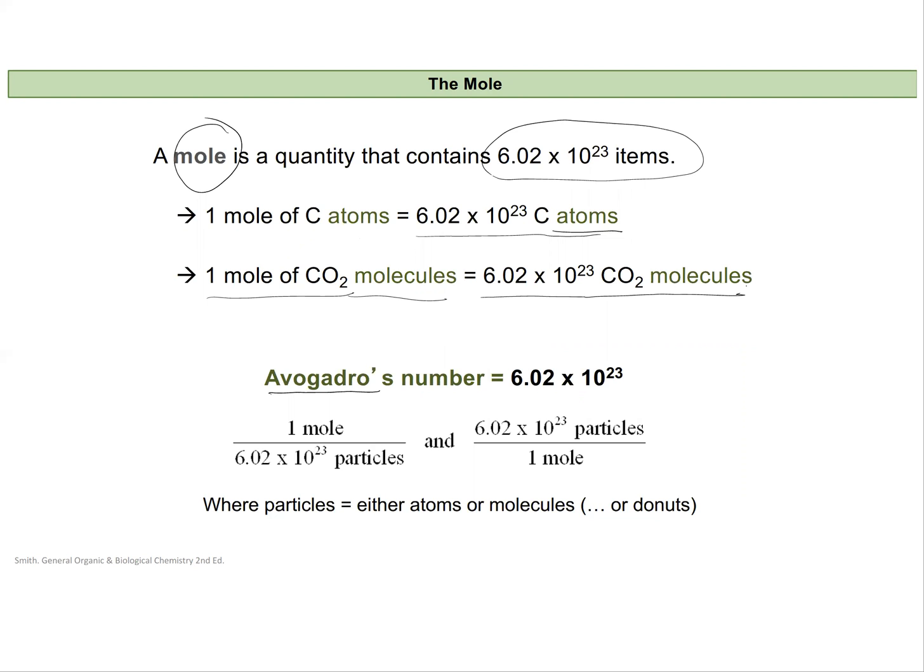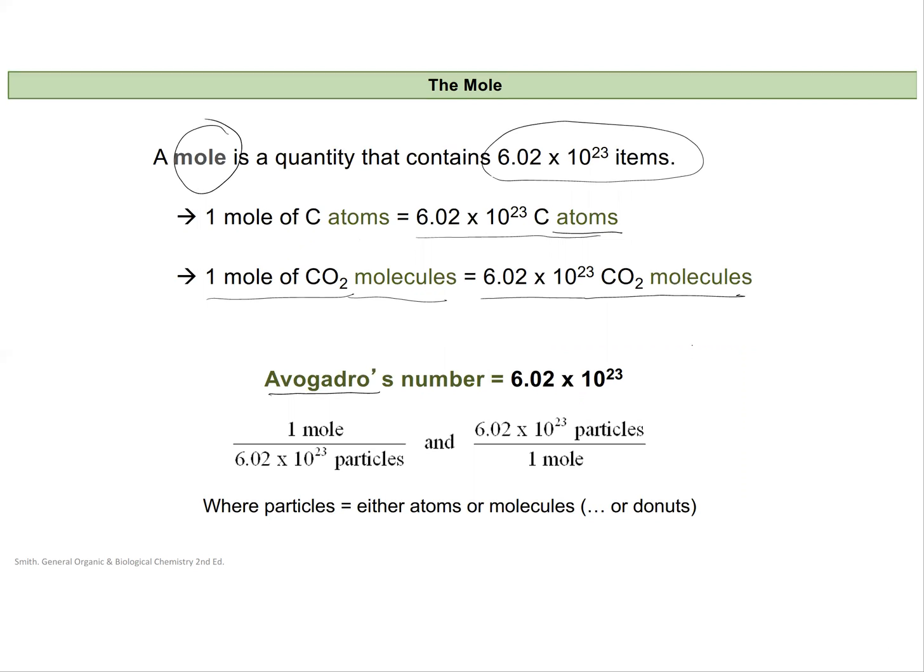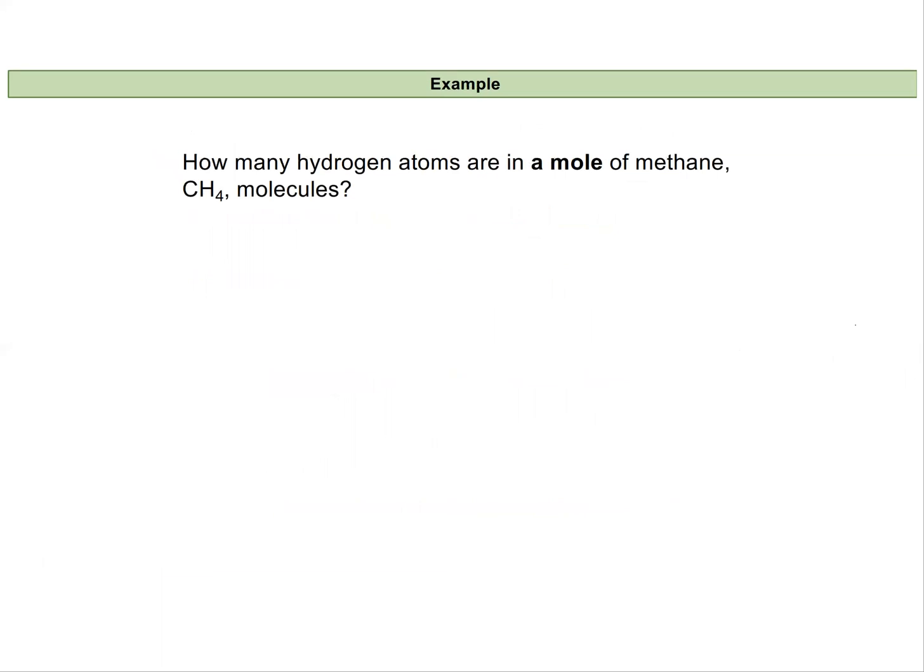So we can use this actually as a conversion factor as well. It's giving us this equality between moles as units and anything. I'm using particle here to represent atoms or molecules or donuts. So I have 1 mole equals 6.02 times 10 to the 23rd particles for my conversion factor. And I can represent that as a fraction depending on how I need to use it in a calculation.